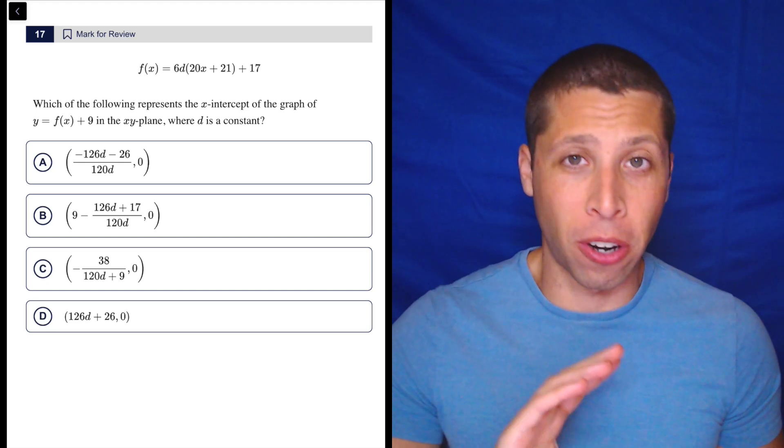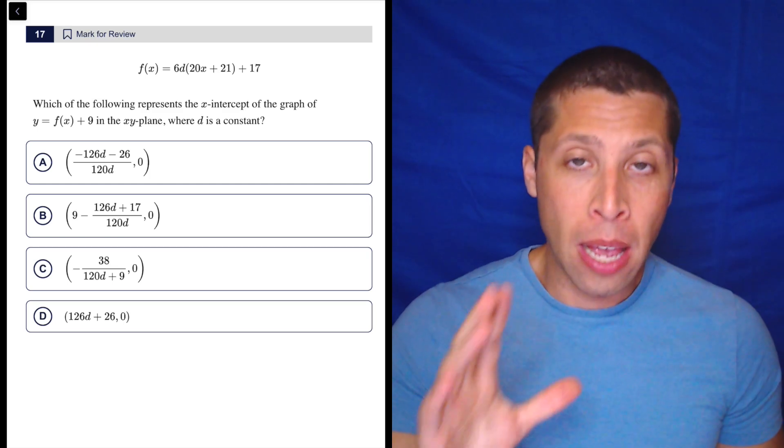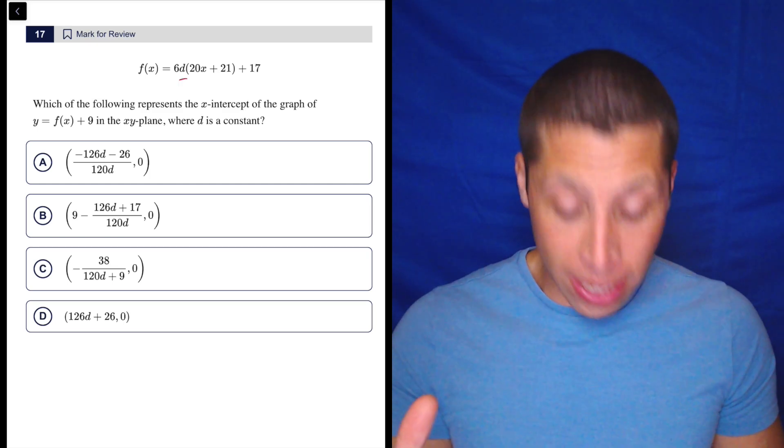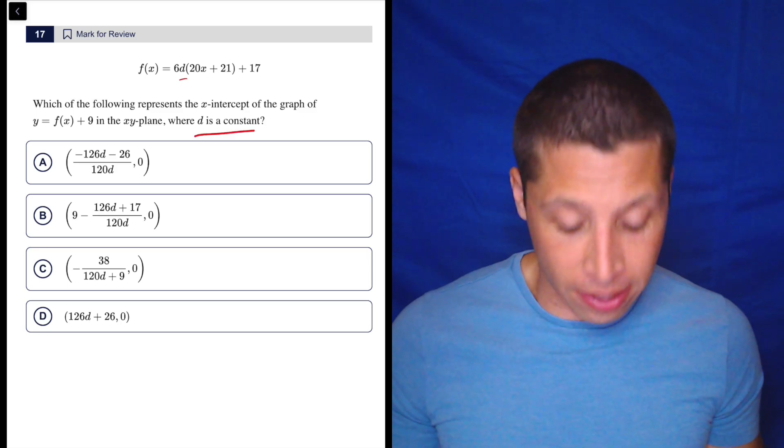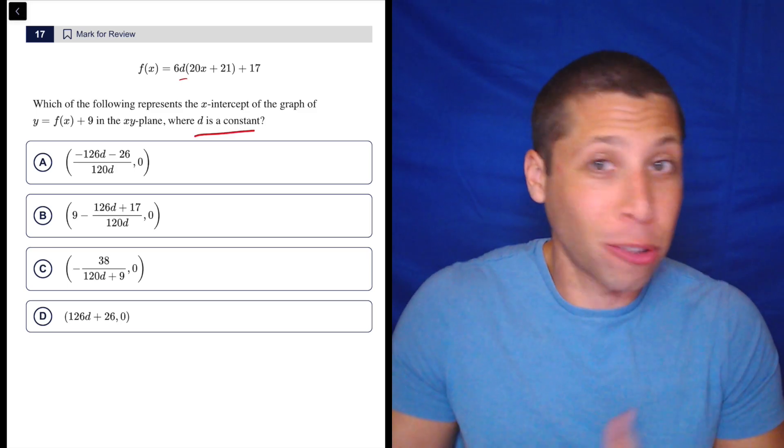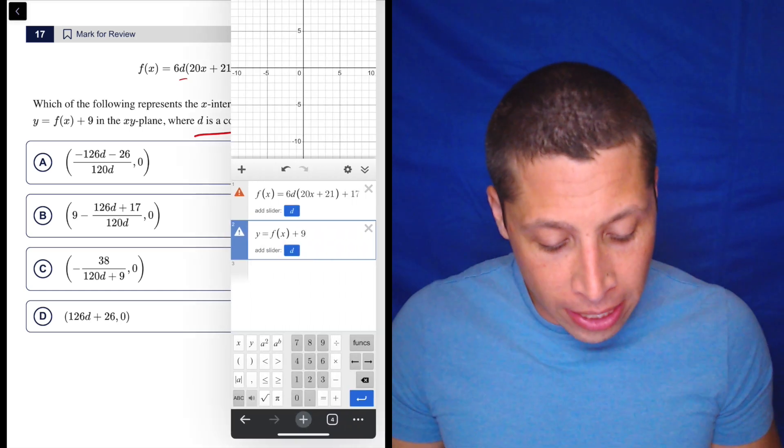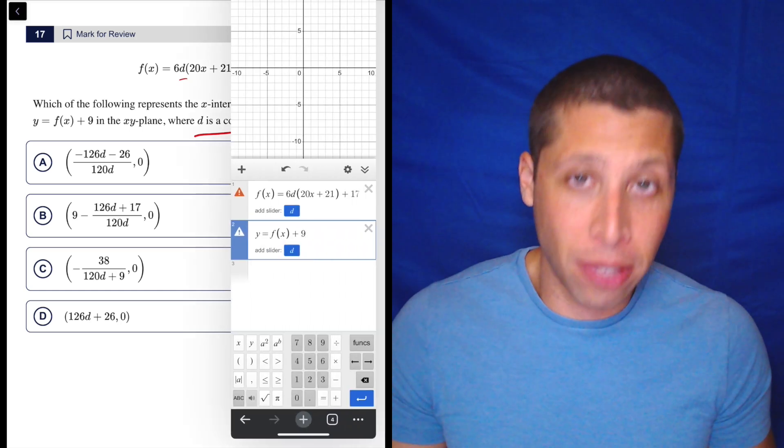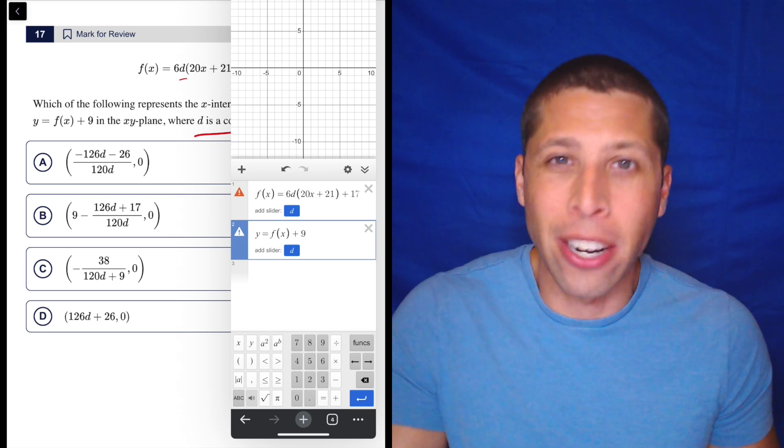We can do this without Desmos if you're comfortable with function notation, but no matter what, you're going to want to get rid of this D because that is just some random constant. They just say it is a constant, there's no restrictions whatsoever. And we want to have an actual equation. If we try putting this in Desmos, it's going to force us to pick a value for D because it can't graph something with this missing letter here.